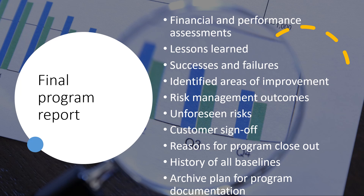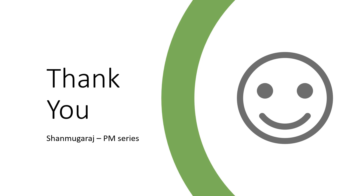As part of program closure, a final program report is generated. The contents may include financial and performance assessments, lessons learned, successes and failures, identified areas of improvement, risk management outcomes, outstanding risks, customer sign-offs, reason for program closeout, history of all baselines, and an archival plan for program documentation. Lessons learned is especially important — it helps identify what was done well, what needs improvement, and how future programs will change their way of working.